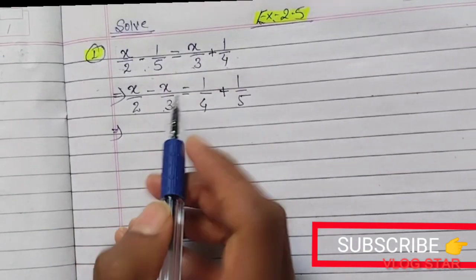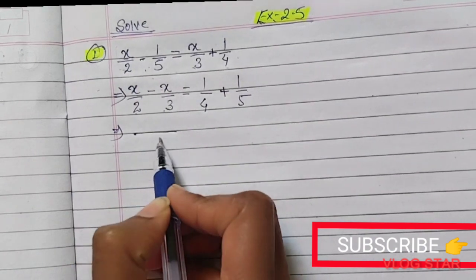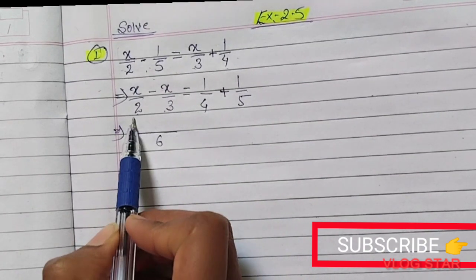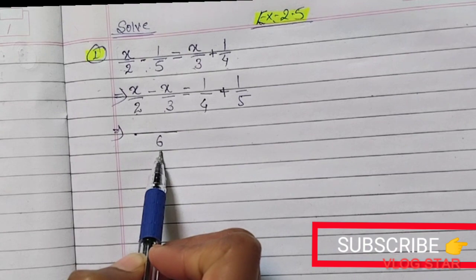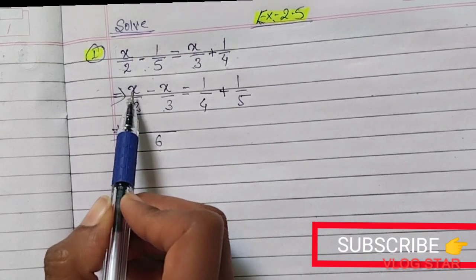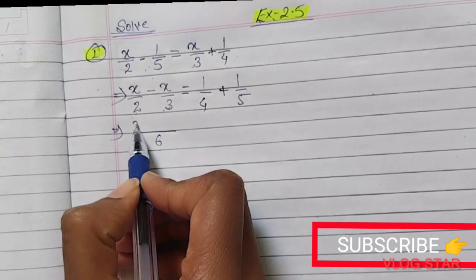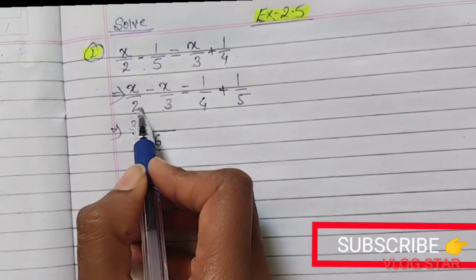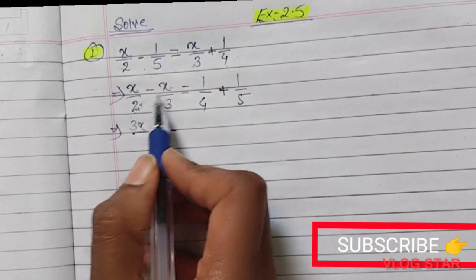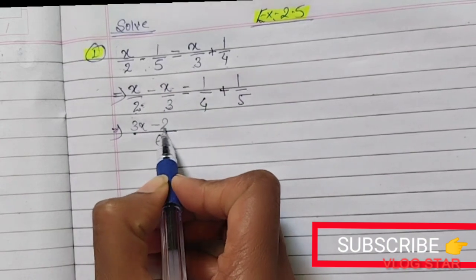The LCM of 2 and 3 is 6. In the table of 2, at 3 times we get 6, so I multiply 3 with the x. Or simply you can cross multiply. I get 3x. If I cross multiply with the 2, I will get 2x.